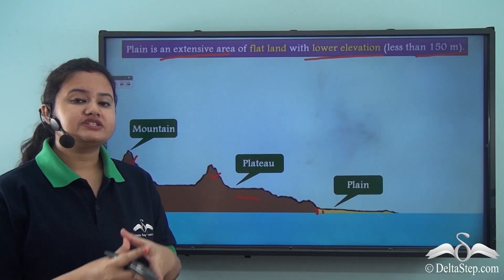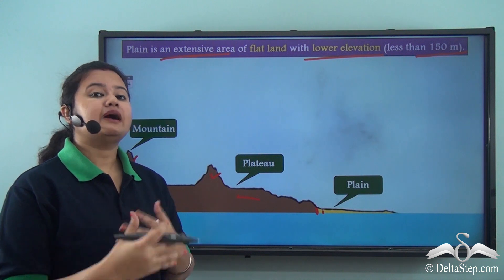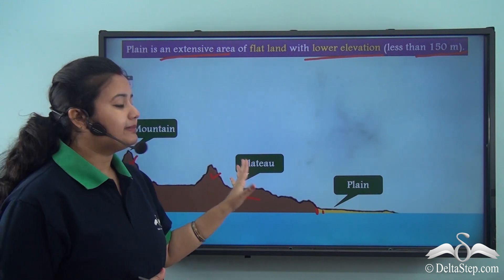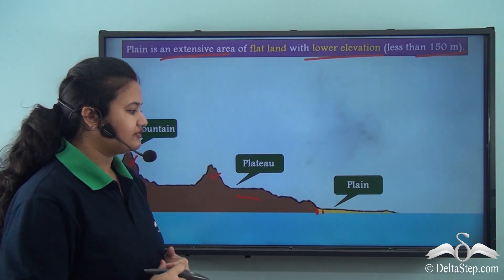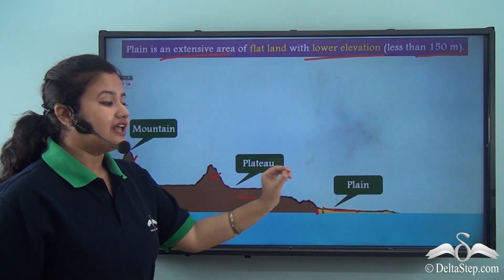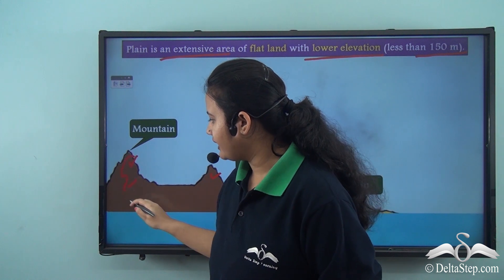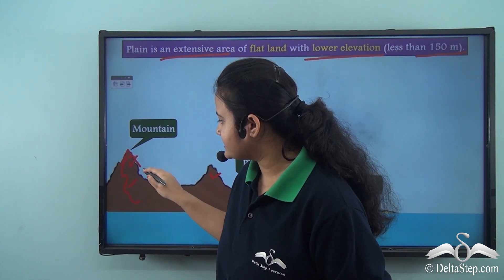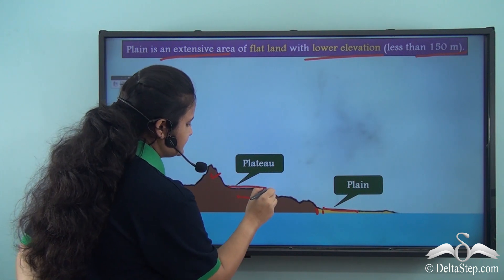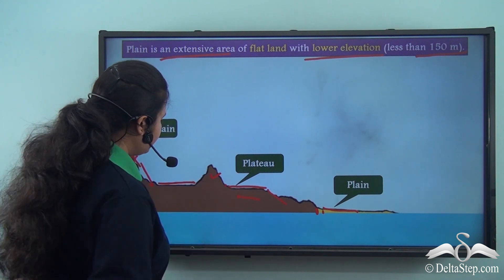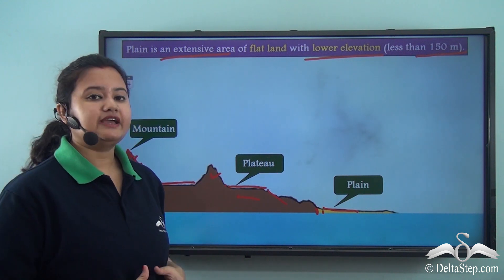From this figure, can you distinguish between the three different types of landforms? In our previous lessons we studied about mountains and plateaus, and today we are studying about plains. Plains are an extensive area of flat land with very low elevation. Mountains have higher elevation with a confined summit and steep slopes, while plateaus have a flat top and steep edges.